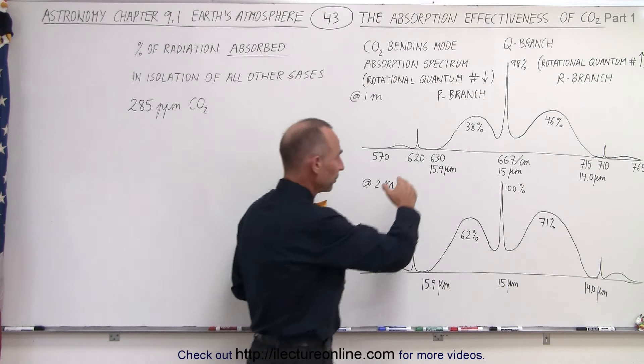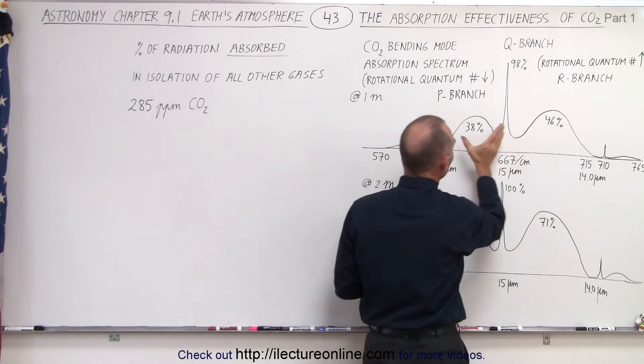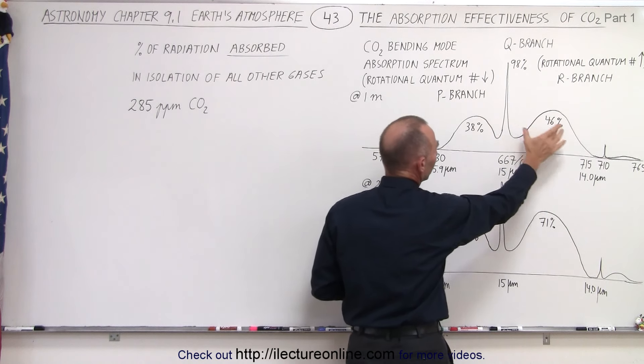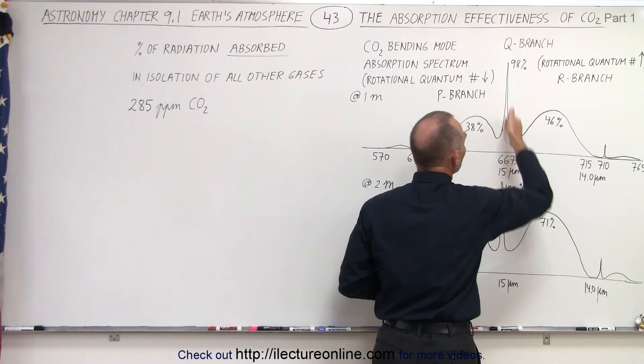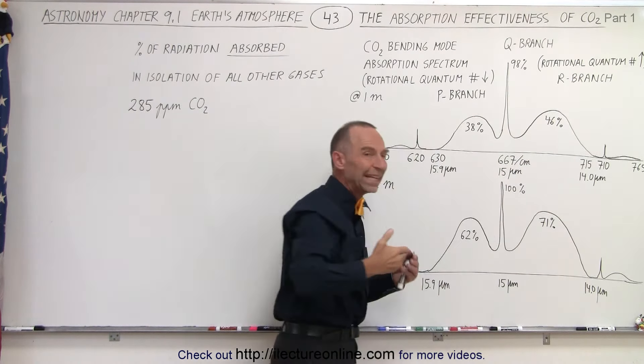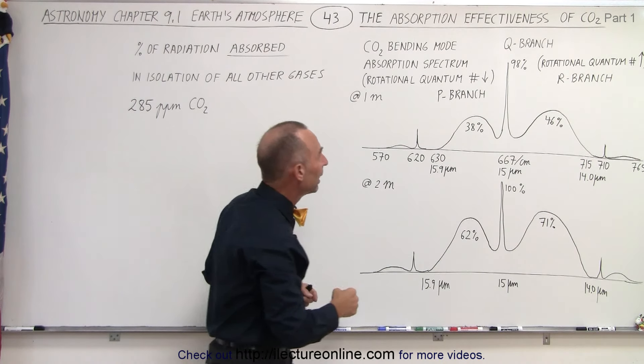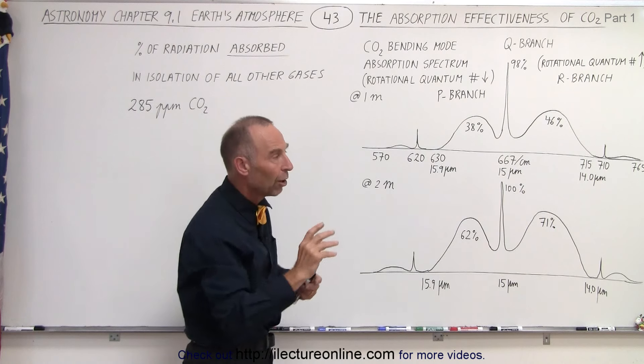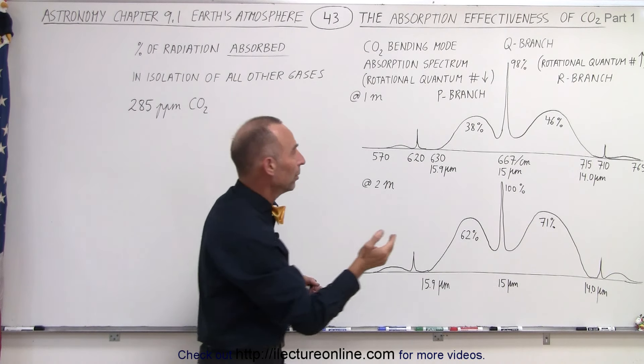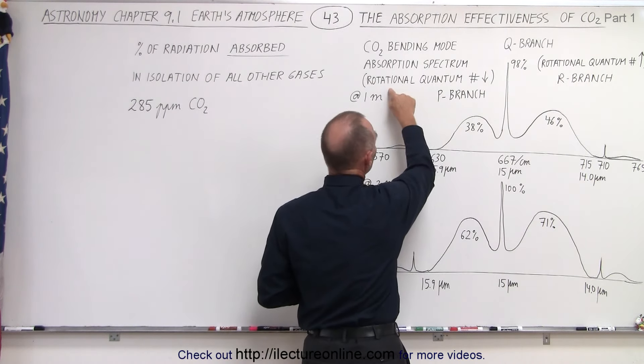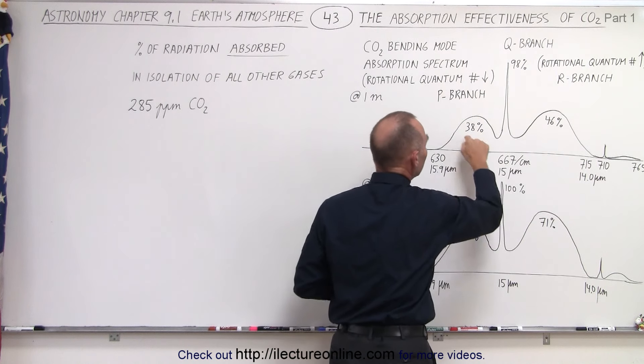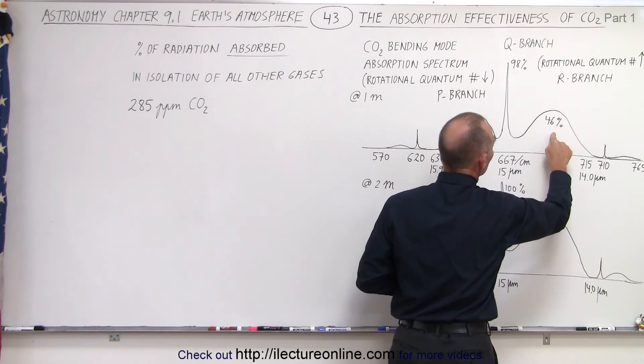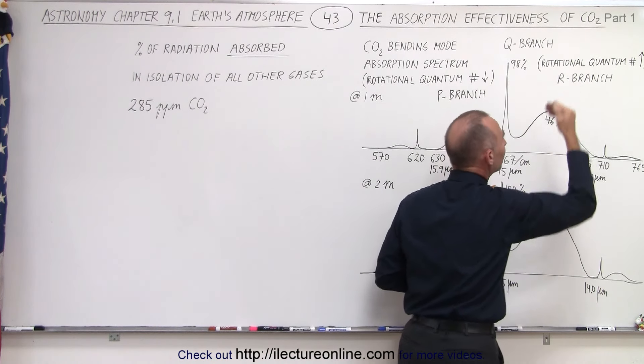Now the shape is pretty peculiar. You can see it has a peak in the middle, on the left what we call the P branch, on the right we call the R branch. The peak represents changes in the bending quantum number, and the P and R branches represent changes on top of that of the rotational quantum number. The P branch represents rotational quantum number drops of 1, and the R branch represents rotational quantum number increases of 1.